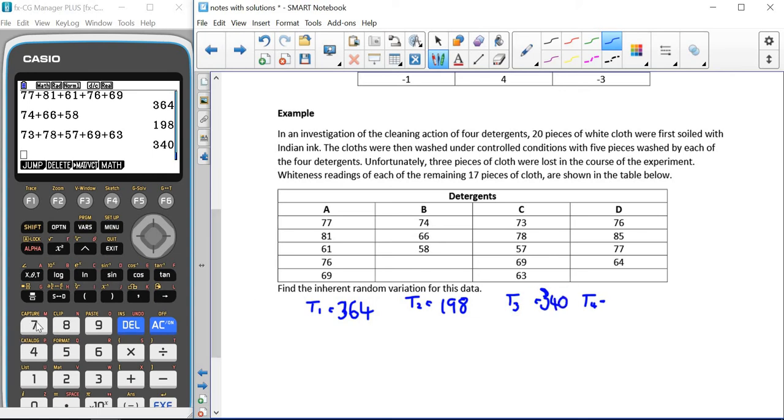And for our last group, we have 76 plus 85 plus 77 plus 64, which gives us 302.